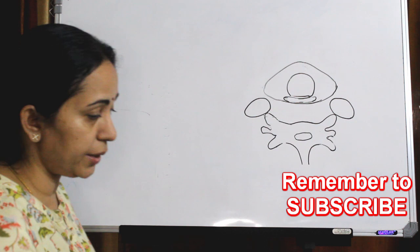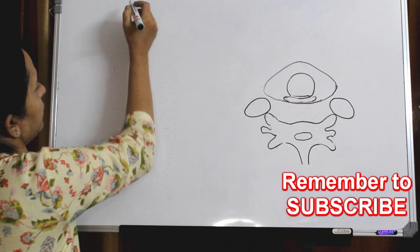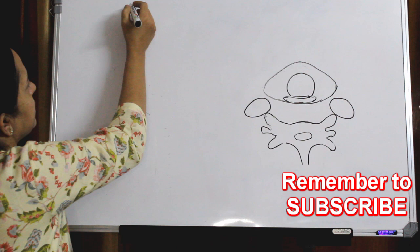I have already explained the parapharyngeal abscess, peritonsillar space, and parapharyngeal space. They are all neck spaces, and this retropharyngeal space is one of the deep neck spaces.